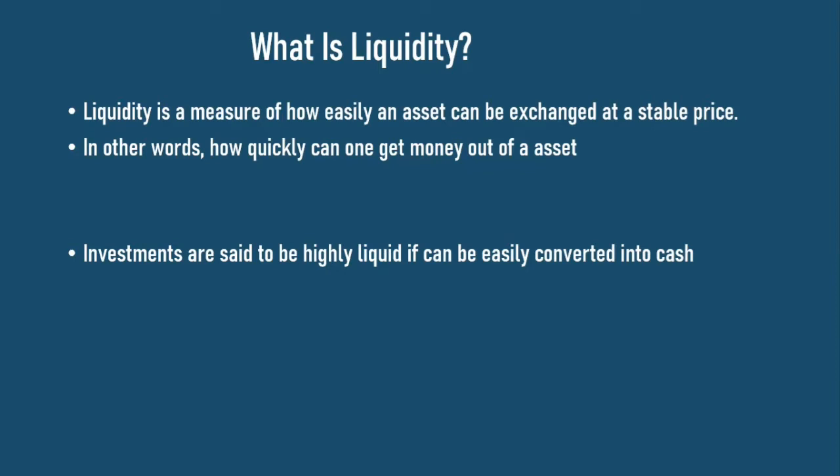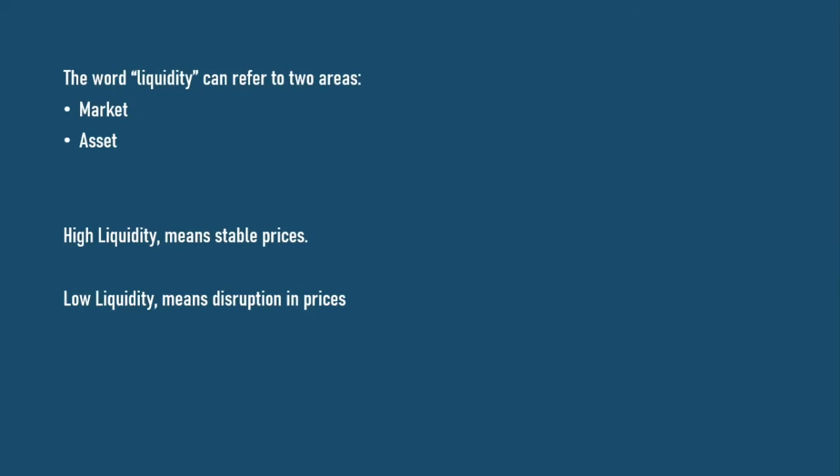With property, sales usually take months or more depending on market conditions. With stocks, because you have market makers they are highly liquid — if you were to sell your stock today, provided the market is open, you'll be able to get rid of your asset quickly. That's why stocks are considered highly liquid in comparison to the property market.